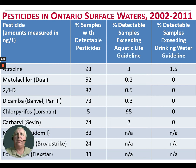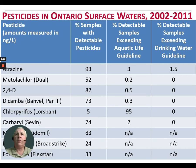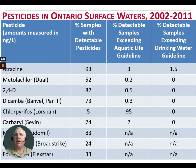We can measure in parts per billion and trillion, but 93% of those water samples during the 2002 to 2011 period had detectable amounts of atrazine. Of that 93%, the next column shows that 3% of those samples exceeded the aquatic life guideline — in other words, it could be harmful towards aquatic life. On the far right column, 1.5% contained atrazine that exceeded the drinking water guideline, so that water was not safe to drink.